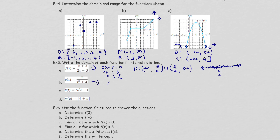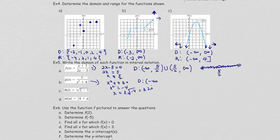For the second function g(x), it is also a fraction, so the denominator cannot equal zero. But x² will always be a positive number — it can never equal zero over the reals. So there are no restrictions, and the domain of g(x) is all real numbers, written as (-∞, +∞).